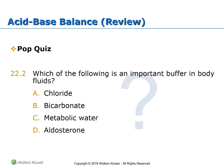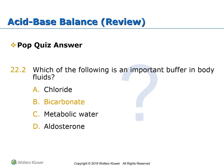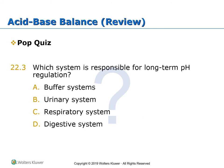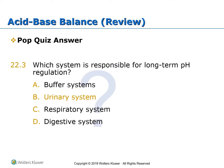Which of the following is an important buffer in body fluids? A. Chloride. B. Bicarbonate. C. Metabolic water. D. Aldosterone. An important buffer in body fluids is bicarbonate. Which system is responsible for long-term pH regulation? A. Buffer system. B. Urinary system. C. Respiratory system. D. Digestive system. The system responsible for long-term pH regulation is the urinary system.